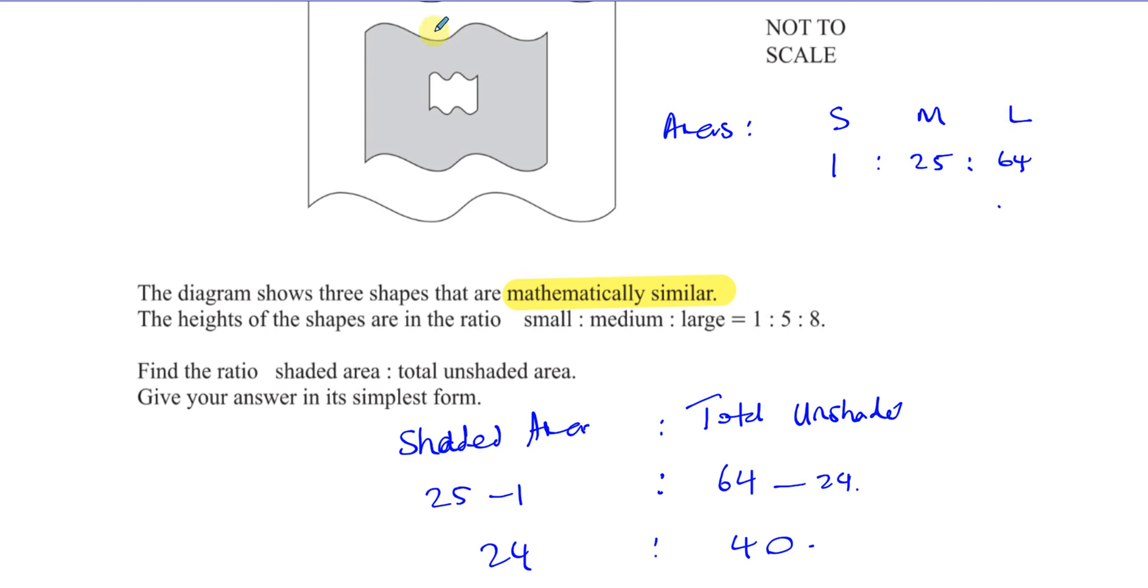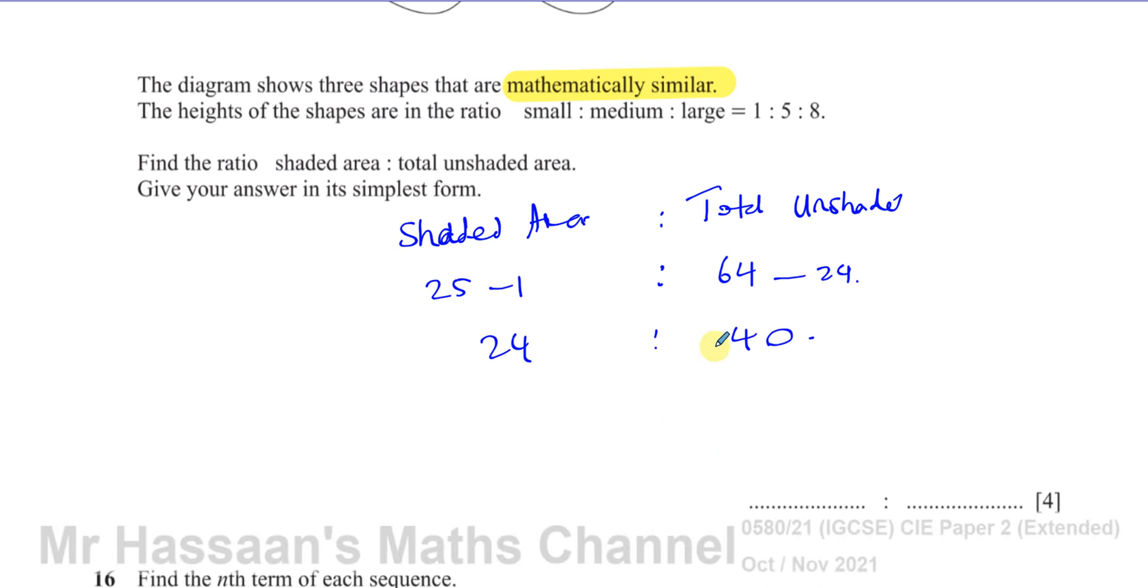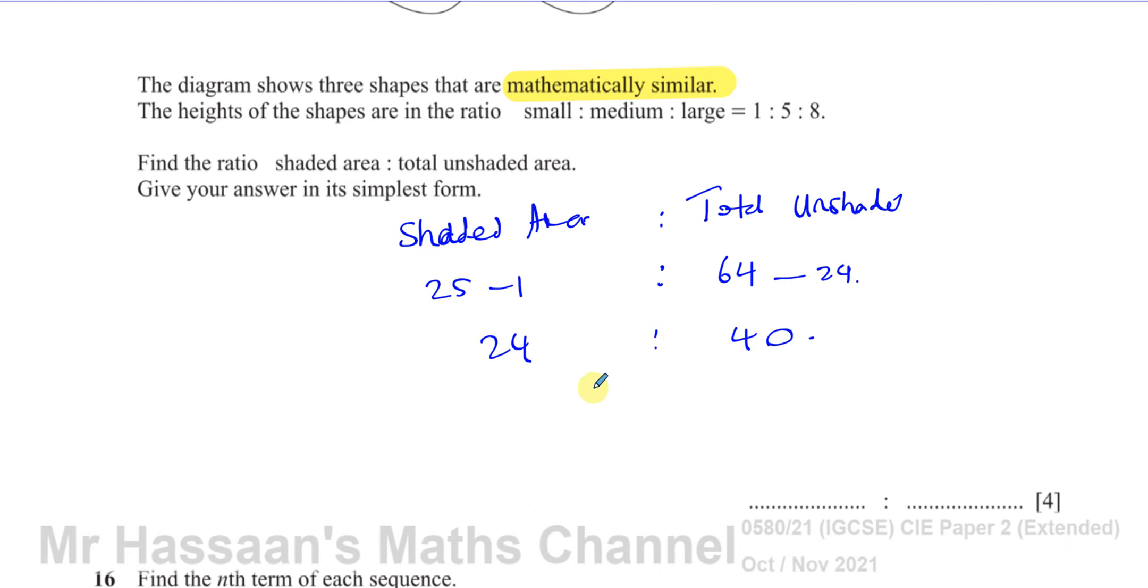So 64 minus this part we just found, the unshaded area. It's the white part. So you could say it's going to be the whole thing minus this part we just said was shaded. So it's the whole thing, which is 64 minus 24. So that's the ratio we need, 24 to 40 in its simplest form.